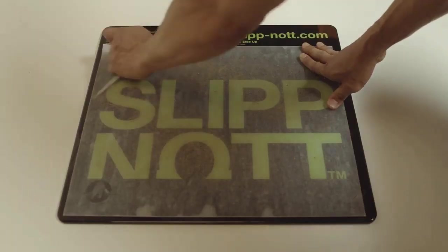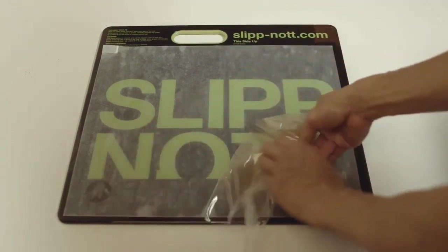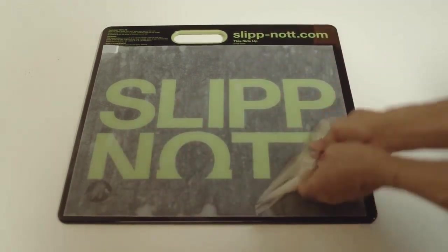As the sheets get dirty, you peel them off. When you get down to the red sheet, that is the last sheet. Peel that off and you will need to replace the mat.